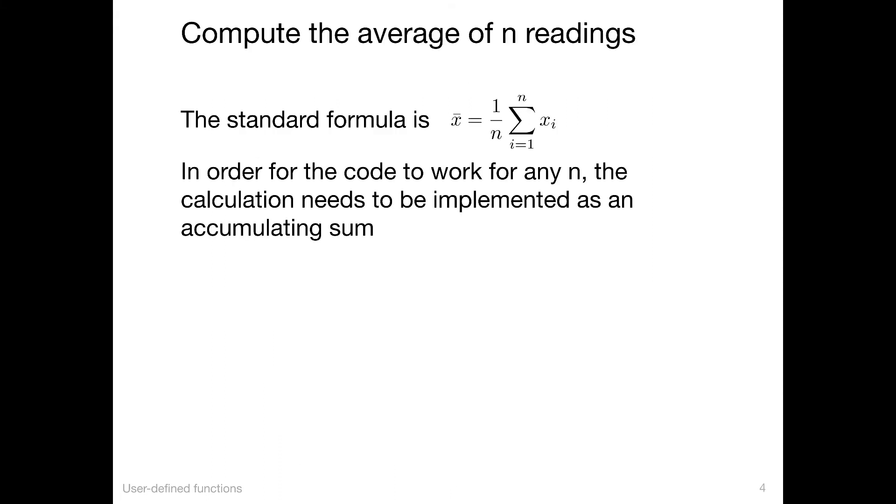We're going to compute the average of n readings. X sub i is a symbol used to designate an individual reading, reading i, and we're going to add up those readings, one to n, divide by n, and we'll get the average.